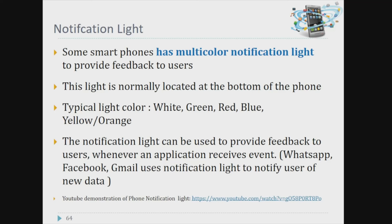Sometimes when a message arrives, your phone will receive a notification via the light — it depends on the mobile application you use. The notification light is typically white, green, red, blue, yellow, or orange depending on your device. The notification light can be used to provide feedback to users whenever an application receives an event — like WhatsApp, Facebook, or Gmail.